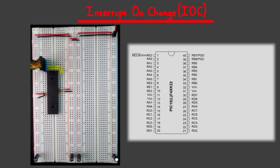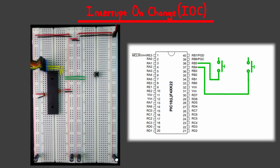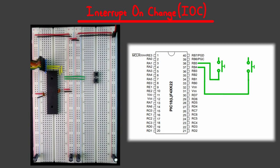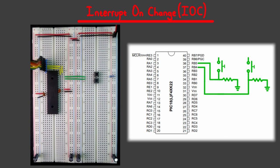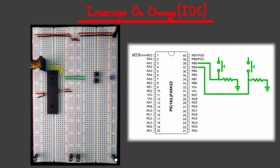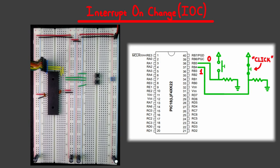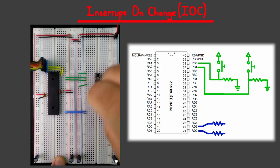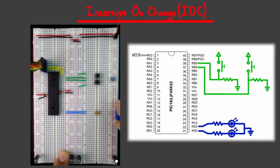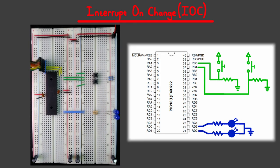Let's make a quick example for interrupt on change. I'll connect two buttons to the RB5 and RB4 pins, as they have IOC functionality. I'll also connect resistors to pull these pins to ground, and connect the other side of the button to 5 volts, so that initially these pins will be connected to ground. Whenever I press the buttons, they will connect to 5 volts. I'll also connect a resistor and an LED to the bottom two pins so I can use them as outputs.